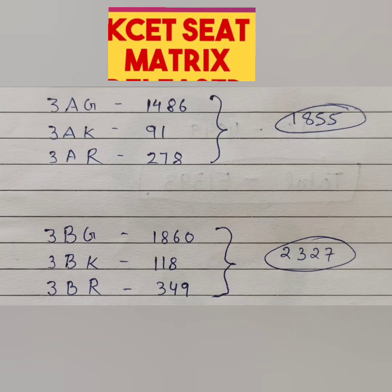Then there are categories 3A and 3B. Within those main categories there are also sub-categories. The seats for 3A category are exactly the same as the previous one — 1855 or 1856 with the same breakup. For 3B, the number of seats is higher at 2327, and you can see the breakup across sub-categories 3BG, 3BK, and 3BR.